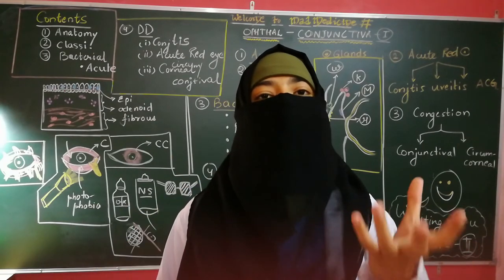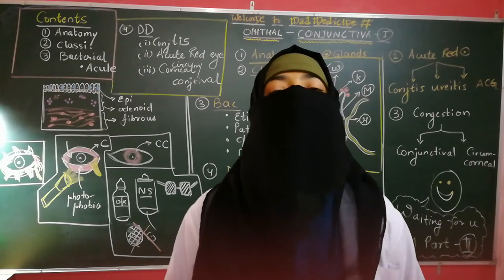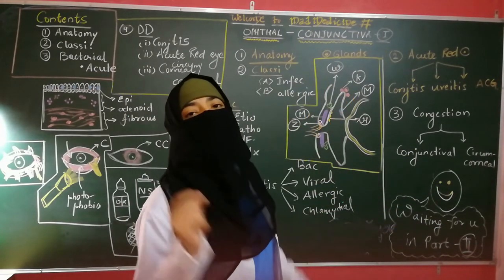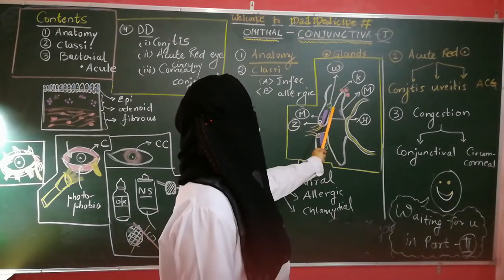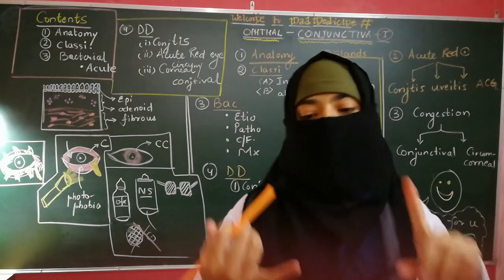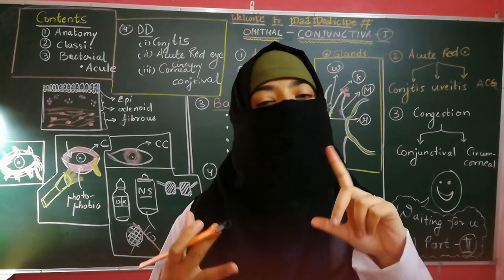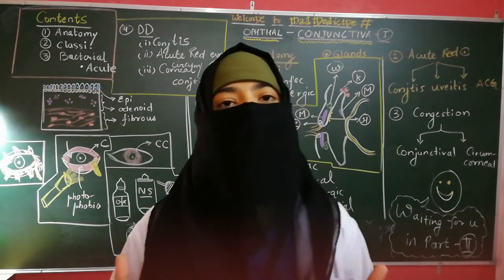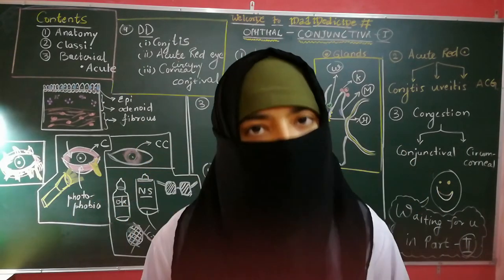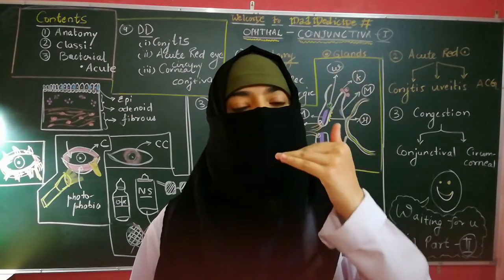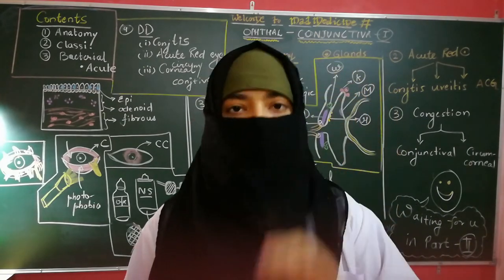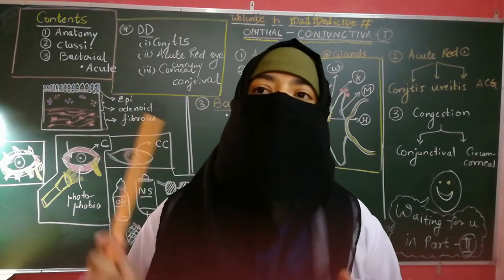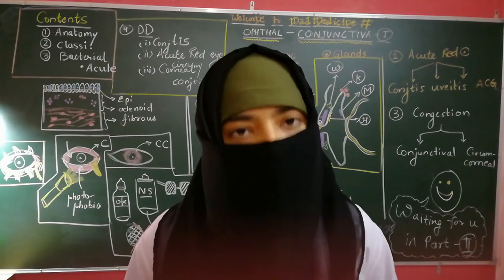There are also accessory lacrimal glands which secrete watery or serous secretions. These include the glands of Krause — the pink ones — and the glands of Wolfring. There are four fornices: superior, inferior, medial, and lateral. That was all about the basic anatomy of the conjunctiva.